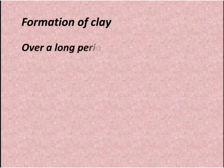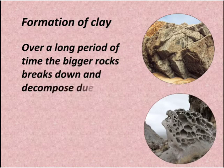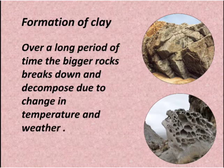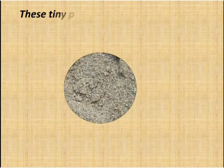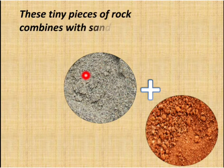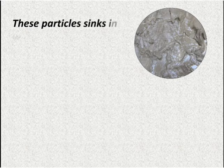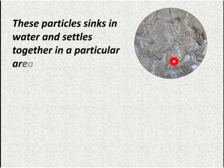Formation of clay: over a long period of time, bigger rocks break down and decompose due to changes in temperature and weather. In the second picture we can see the decomposed rock. These tiny pieces of rocks combine with sand, dried leaves and other wastes. These particles sink in water and settle together in a particular area. This is how clay is formed.